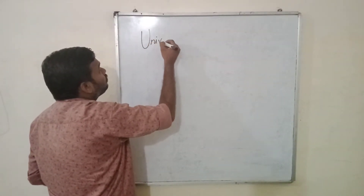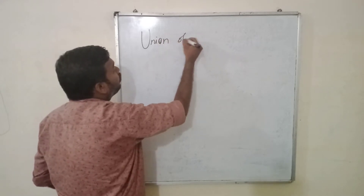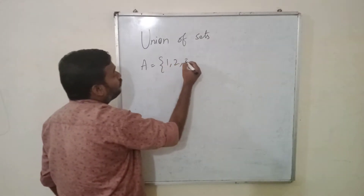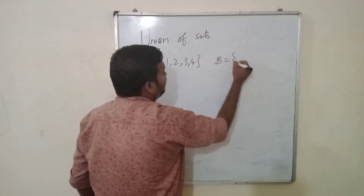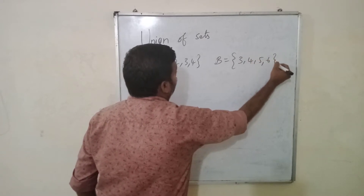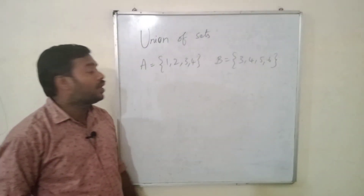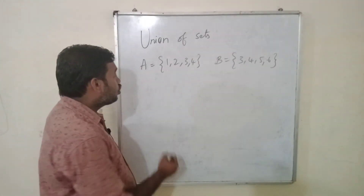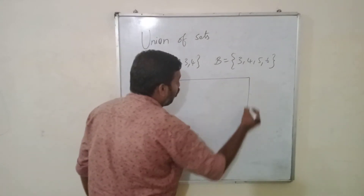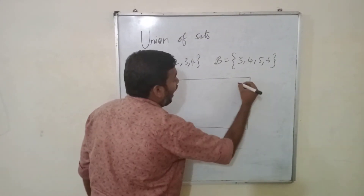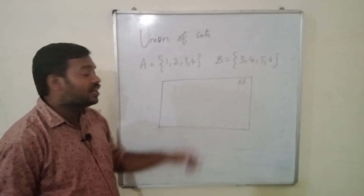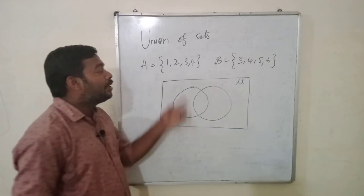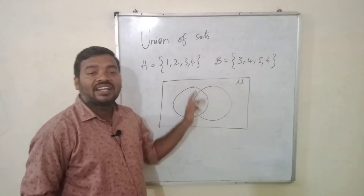First of all, union of sets. Let us say A is {1, 2, 3, 4} and B is {3, 4, 5, 6}. These are the two sets. As there are common elements, you can say these are joint sets. So go for representation of these sets. First we have to represent the universal set, then A and B. As there are common elements, we need to join the sets.